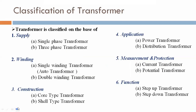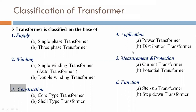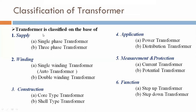Now we are discussing the classification of transformer. A transformer is classified on the basis of: first, supply; second, winding; third, construction; fourth, application; fifth, measurement and protection; and sixth, function. Based on supply, in an electrical system we have two types: single phase and three phase. Similarly, transformers can be classified as single phase transformer and three phase transformer.